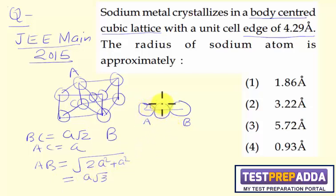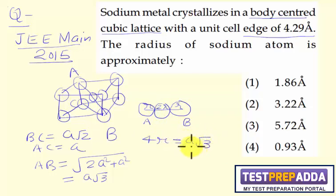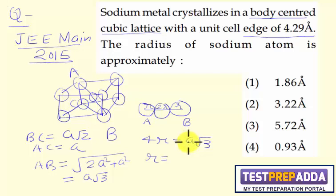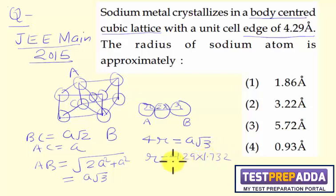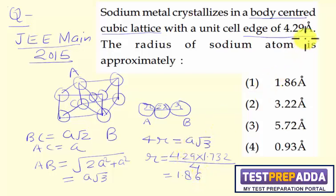In terms of radius, the body diagonal AB equals 4R. So effectively, 4R = a√3, where a is the edge length and R is the radius of the atom. Substituting the value of a = 4.29 angstrom and √3 = 1.732, we get R = (4.29 × 1.732) / 4, which comes to 1.86. Since the edge length is in angstroms, the radius is also in angstroms.